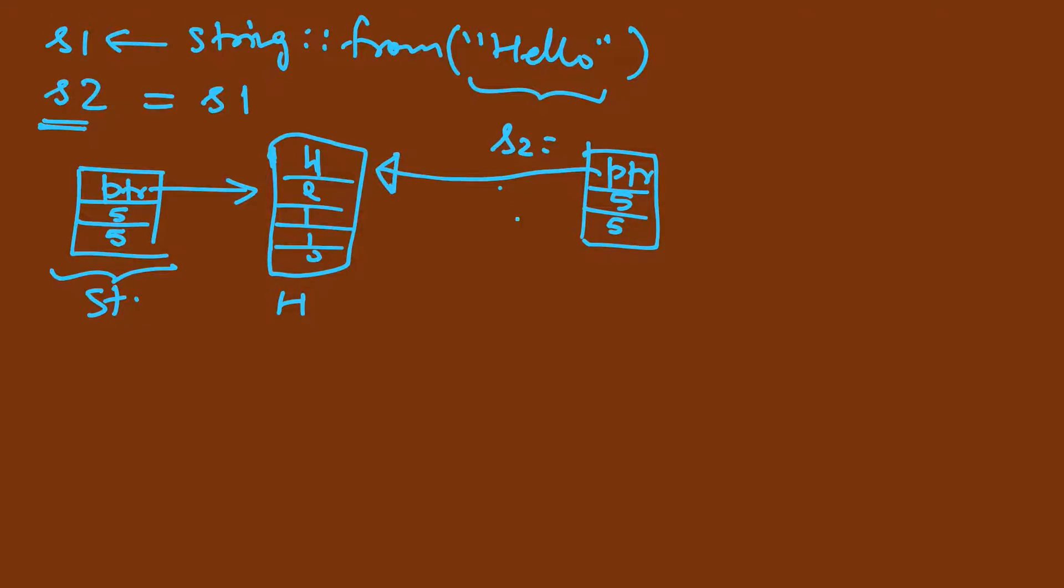S1 was no longer usable, so the ownership has been transferred from s1 to s2. We can use s2 but not s1. This was to avoid the problem of double delete, because when this goes out of scope it does not try to free the memory of s1 and s2 both, but only the owner's memory will be freed.